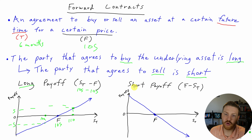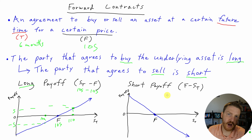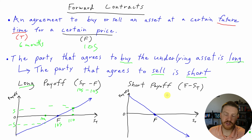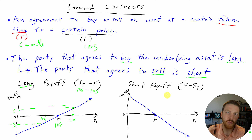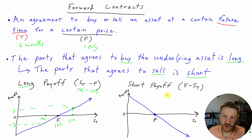The short's payoff is just the exact opposite of the long's payoff. One thing to keep in mind with forward contracts is that it is a zero-sum game — whatever one party gains, the other party must lose. So the short's payoff is just F minus ST, which is the reverse of what we saw for the long payoff.